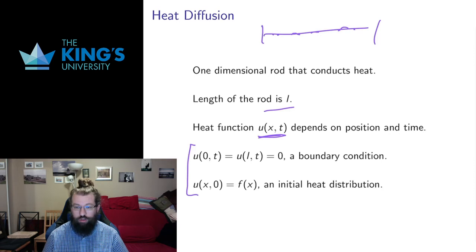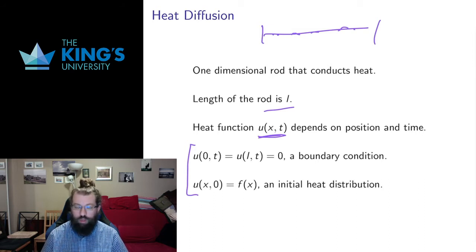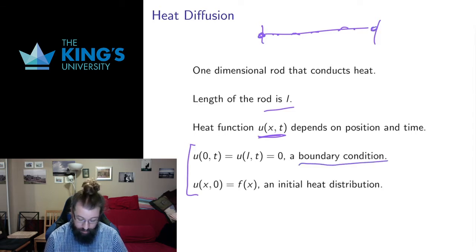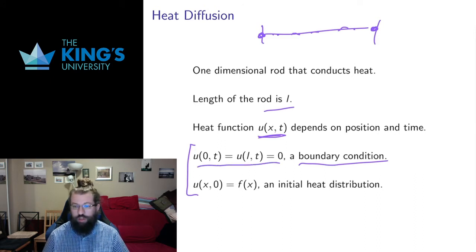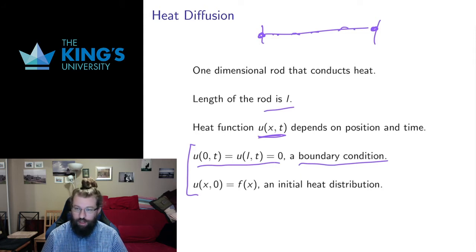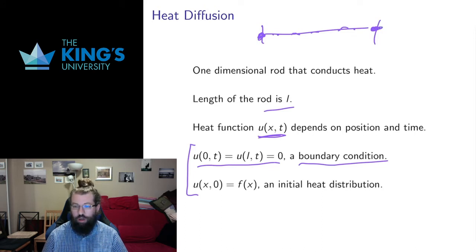I'm going to need some starting information, and this is where partial differential equations become much more complicated. For differential equations of a single variable, we just needed one initial condition — an initial population, an initial position, whatever the case was. Here we need much more. First we need a boundary condition: we need to know what happens to the heat at the edges of the rod. I'm going to assume the temperature is fixed at zero at the edges, where zero is the reference point for the ambient temperature, with a perfect heat sink so the ends of the rod always stay at zero.